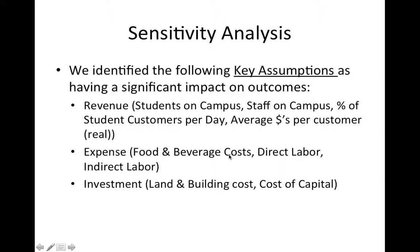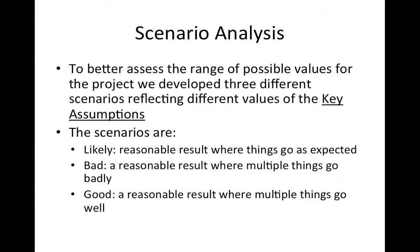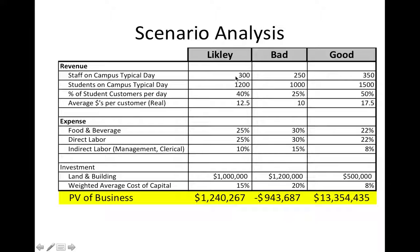Then do your scenario analysis. Explain what it is, present your three scenarios, explain why you picked the values you did for the variables, and why you think those values reflect each scenario. Talk about the range of values you get — in my example there's a pretty large difference between the likely, bad, and good scenarios. Discuss what you think is really driving that. The goal is that the rest of us should better understand how important certain factors are to the result and how much risk there is.